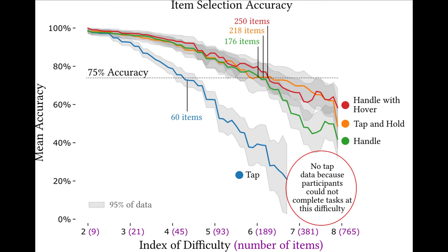Within the three techniques with visual feedback, the handle with hover technique that provides positional and item-level feedback performed best, but we did not find a significant difference in our hypothesis testing.